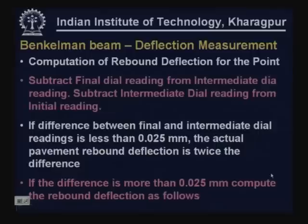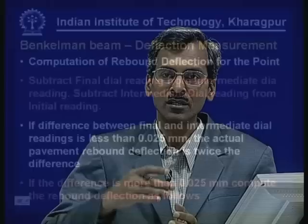For a given stretch of perhaps 1, 2, or 10 kilometers, many deflection measurements will be made. A sample of points is selected, and from all the measured deflections a characteristic deflection is worked out that is representative of the entire pavement stretch under consideration. This characteristic deflection is then used for design and assessing the condition of the pavement.